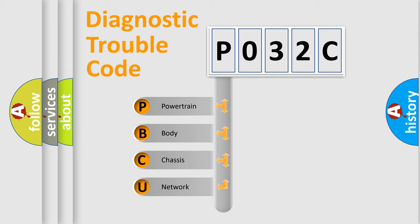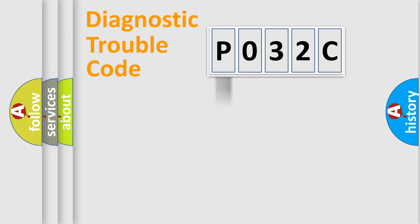We divide the electric system of automobile into four basic units: Powertrain, Body, Chassis, and Network. This distribution is defined in the first character code.